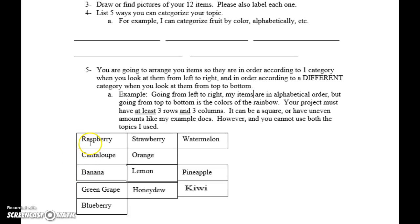So, let's look. They should be alphabetical from left to right. R, S, W. Next row, C comes before O. B, L, P, G, H, K, and then blueberry. Now, again, you have to have three rows. In my case, I have one, two, three, four, five rows, and you have to have at least three columns. One, two, three, but notice it doesn't have to be a box. My blueberry didn't fit up here. It didn't fit up there alphabetically or based on colors of the rainbow, so it had to get its own column, and that's okay. As long as you have at least three rows and three columns.